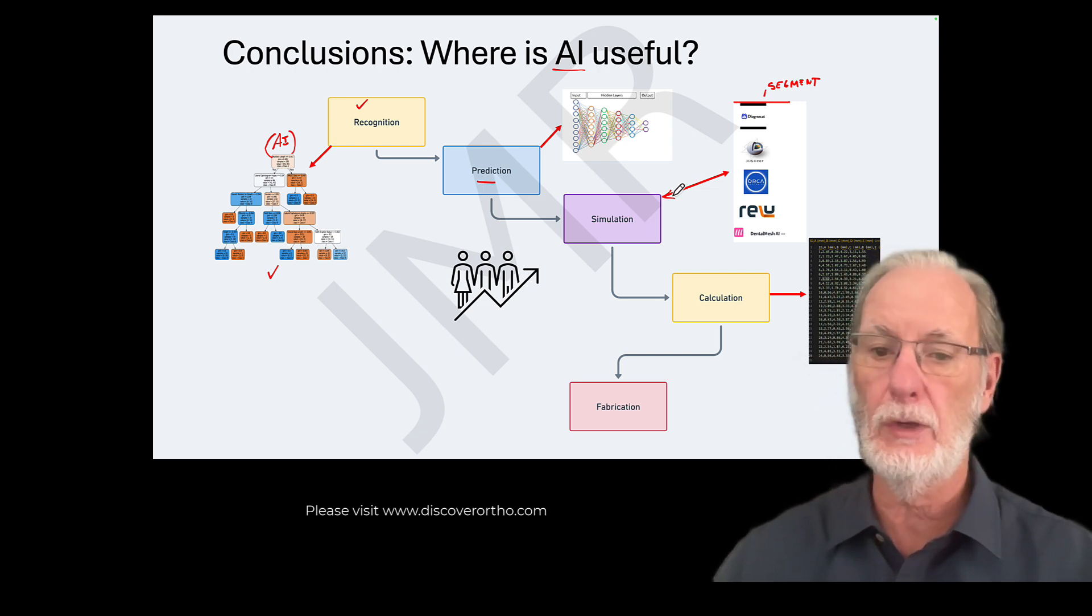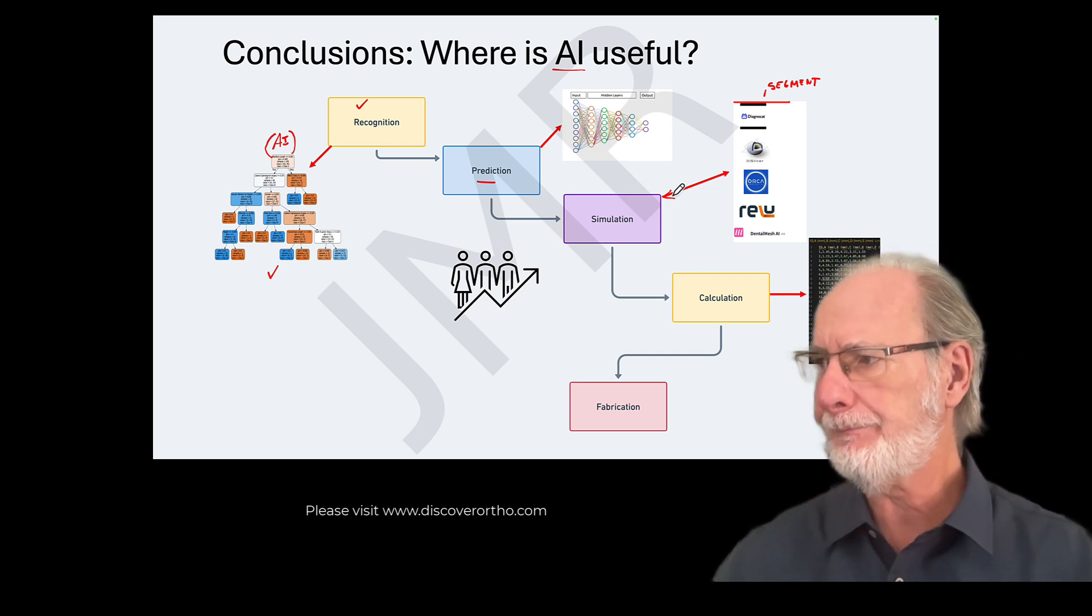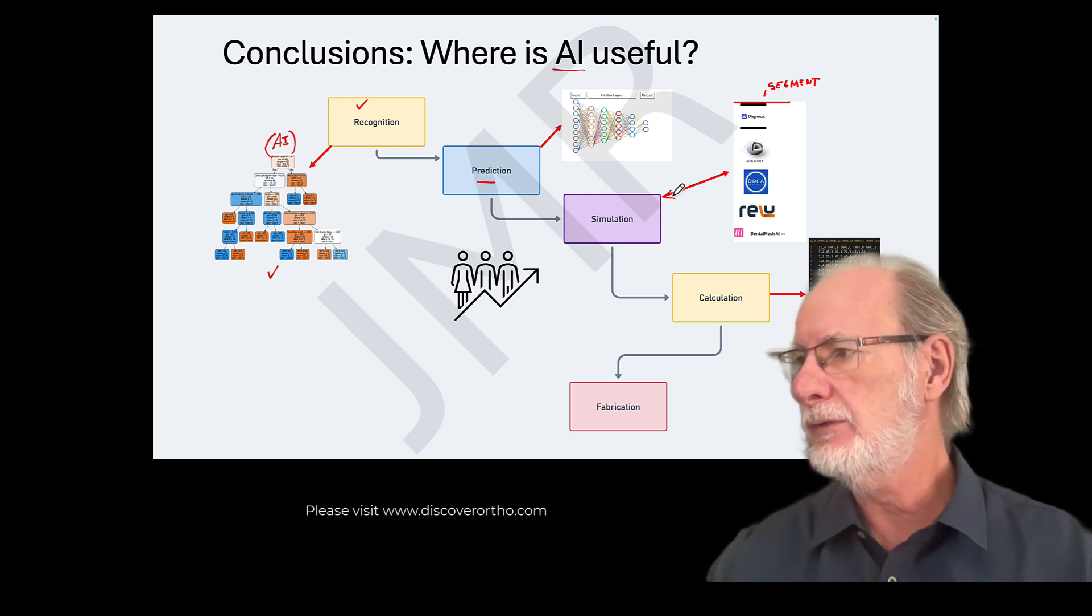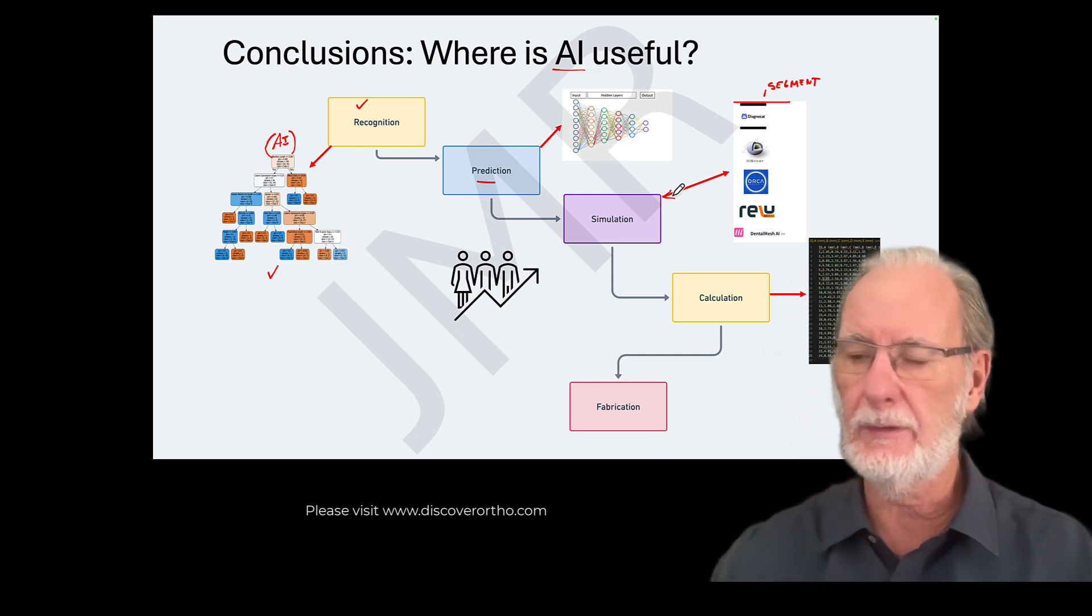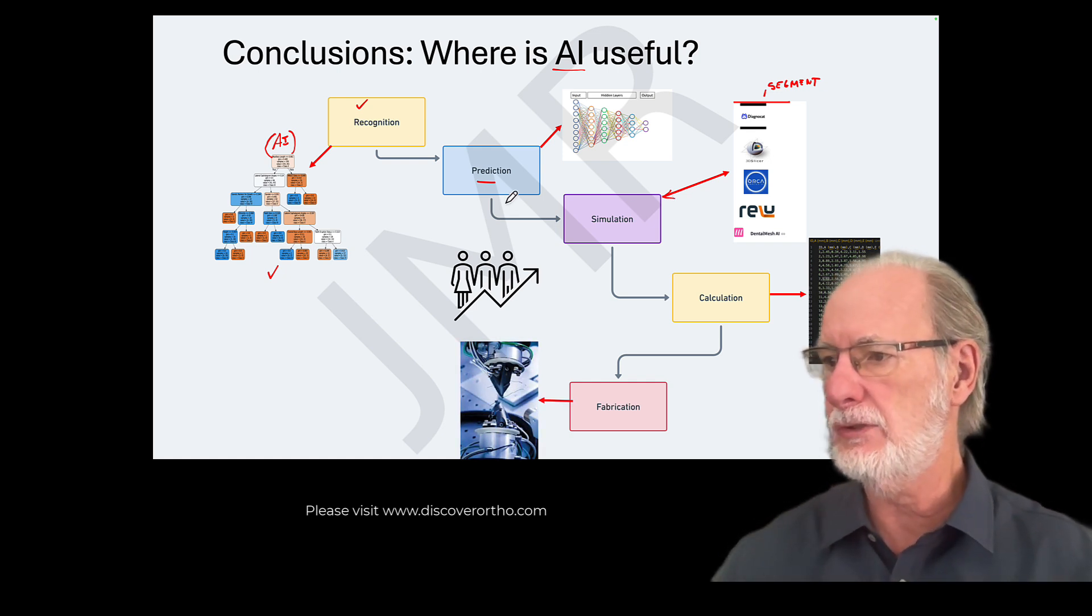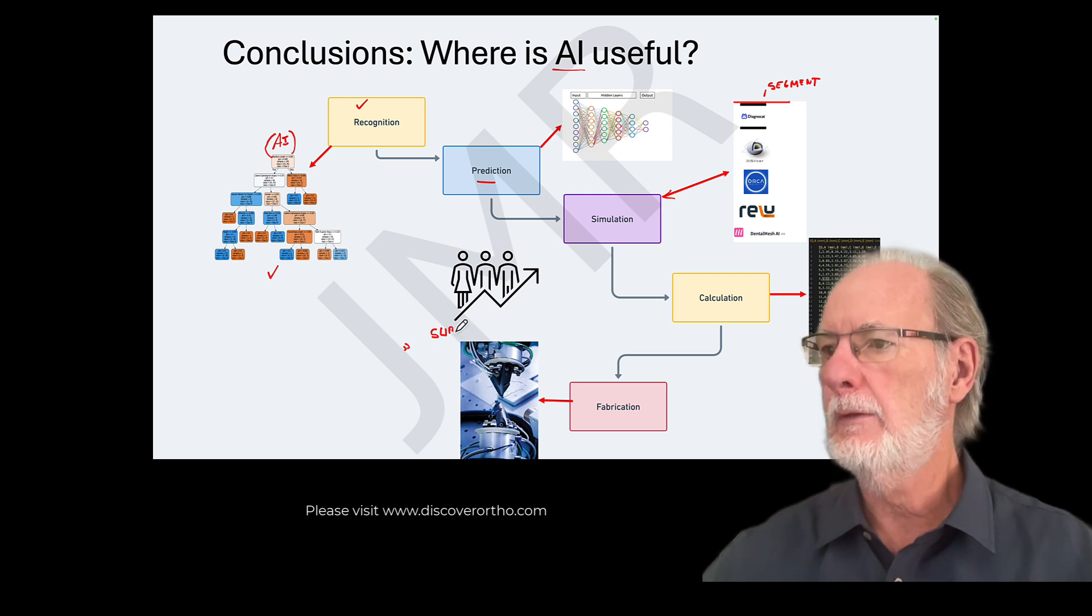So the calculations are now well done. And by the way, aligner companies have been using these for quite a while. So this is what you see on the right hand side, it's called calculations. And then the next step, which I'm interested in, is fabrication. And SureSmile, which is a SureSmile robot right here. Yes, SureSmile robots have been working for about 15 years, but they were not, I don't know if they were using AI.